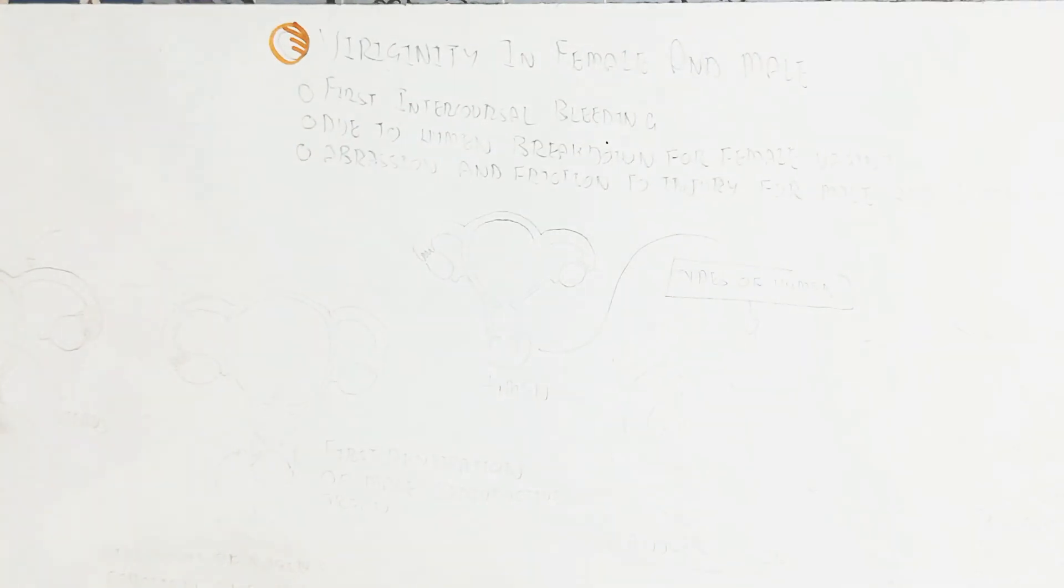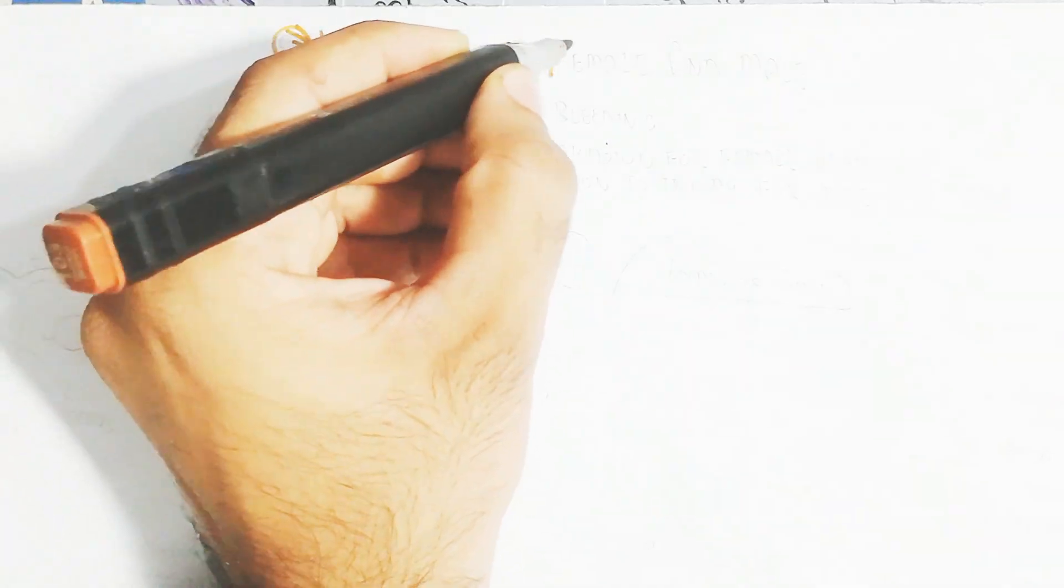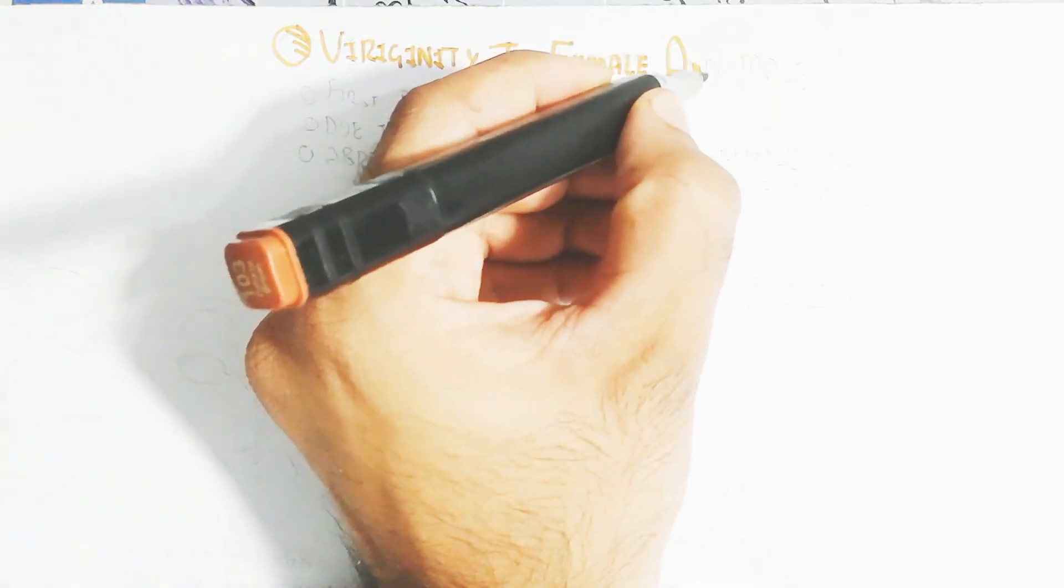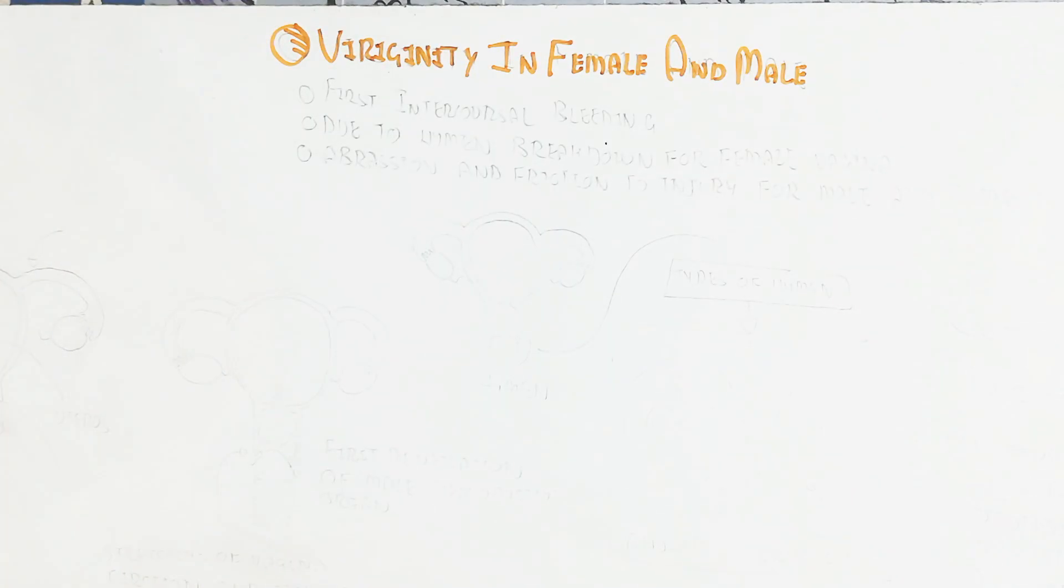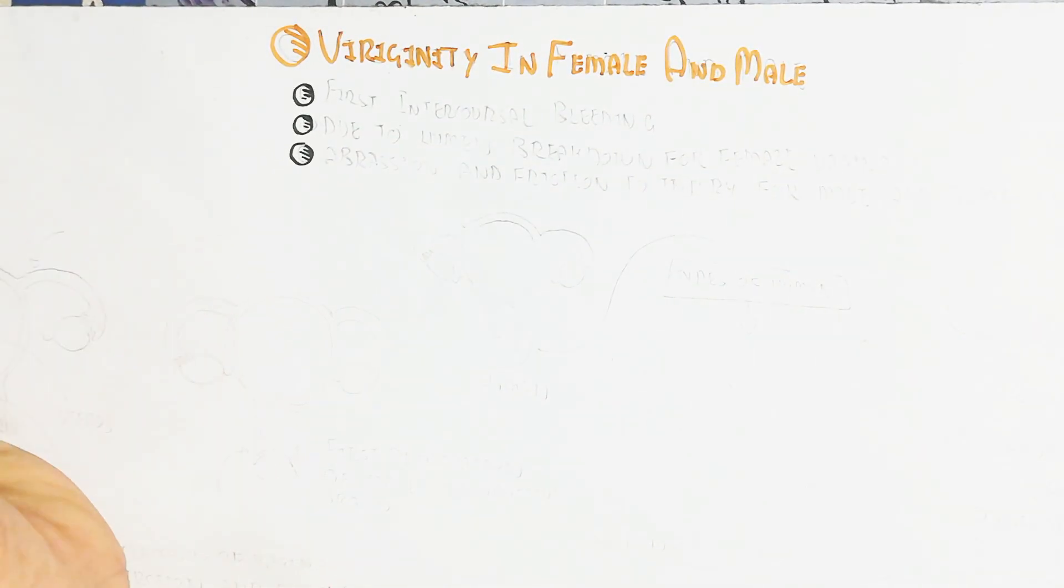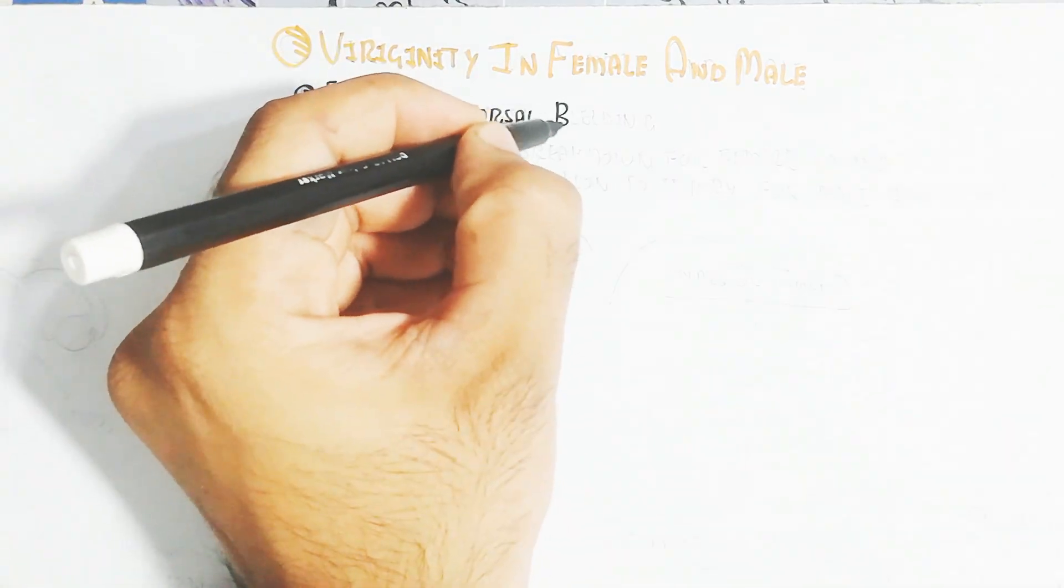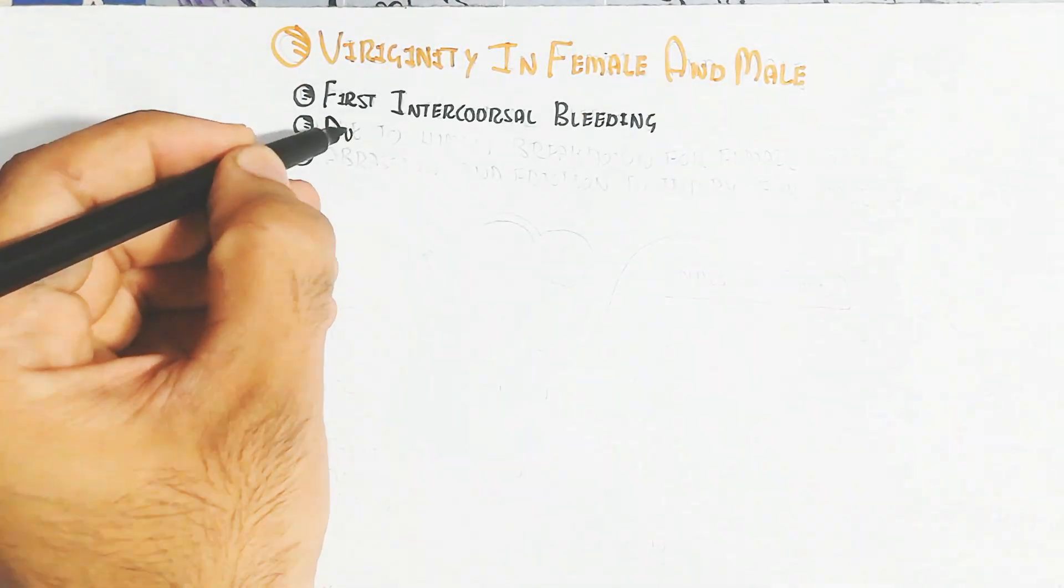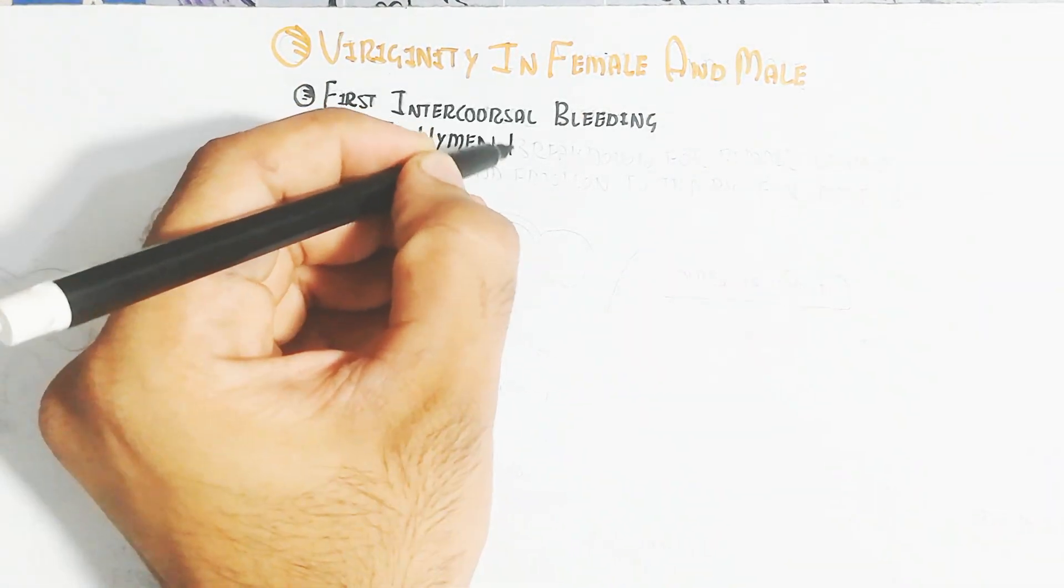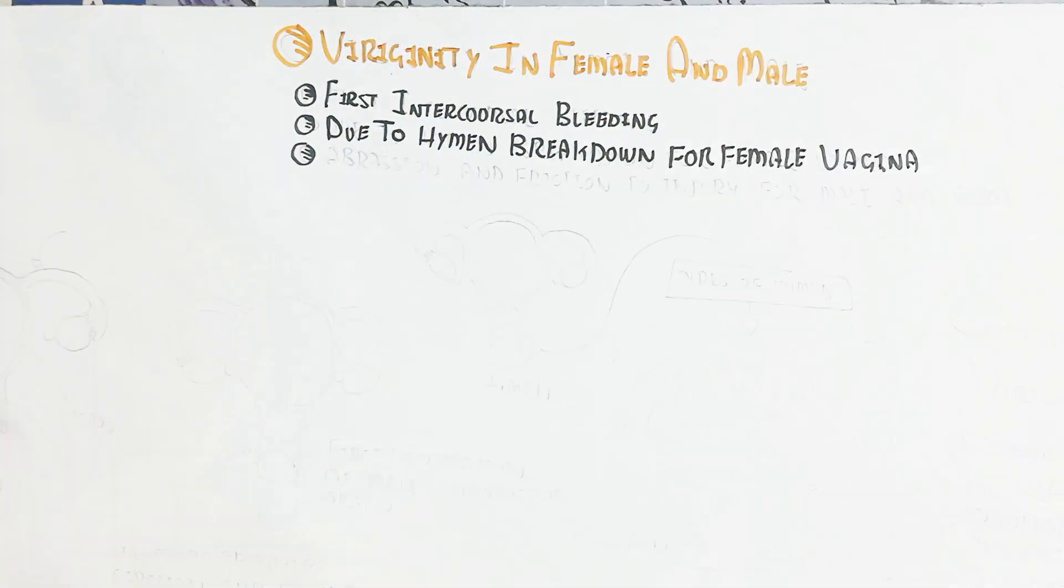Hello, in this video we will understand virginity in female and male, and the complications after virginity loss. Let's begin with the introduction. First intercourse bleeding is known as loss of virginity, in the form of hymen in female, but due to hymen breakdown for female vagina.